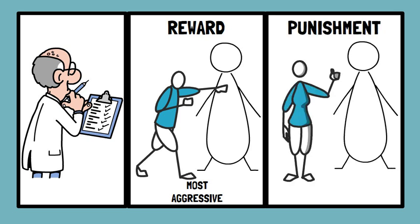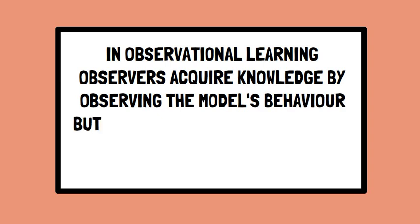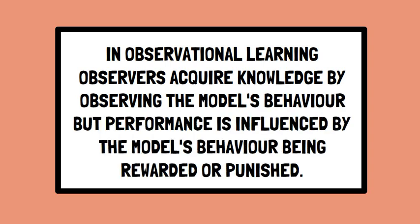Children who had seen the aggressive model being punished were least aggressive. Thus, in observational learning, observers acquire knowledge by observing the model's behavior, but performance is influenced by the model's behavior being rewarded or punished.